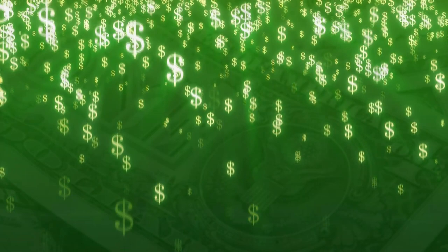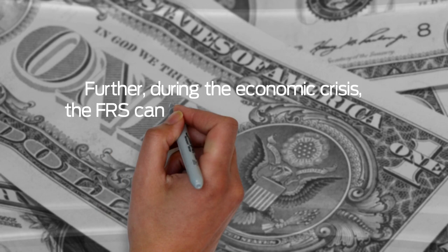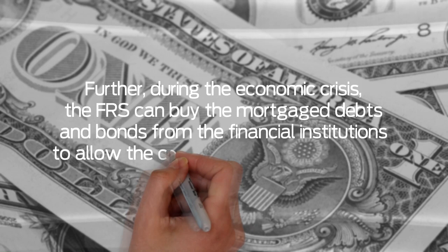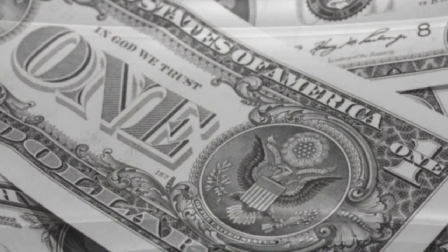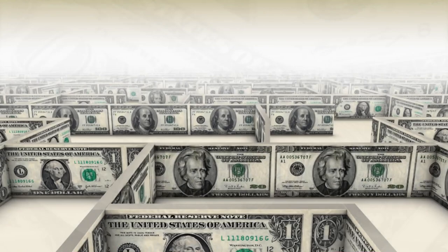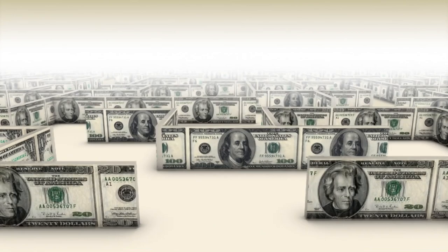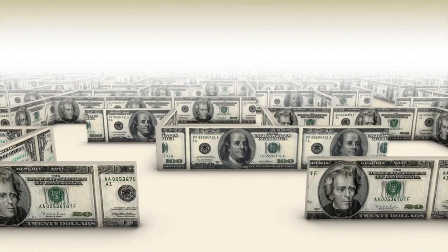Further, during the economic crisis, the FRS can buy the mortgaged debts and bonds from the financial institutions to allow the cash flow within the market. Based on the amount of cash flow within the market, the interest rates can be decreased to stabilize the financial situation within the country. Also, during financial crisis situations, the FRS offers loans to giant financial institutions to take over the failing investment banks and provides a line of credit for the acquisitions instituted to purchase large financial firms. Additionally, the FRS provides loans to central banks of foreign countries to help the local banks to avail loan at a reasonable interest rate. These loans can be used to protect the U.S. market wherein the foreign market economy is influenced partly by the U.S. market.